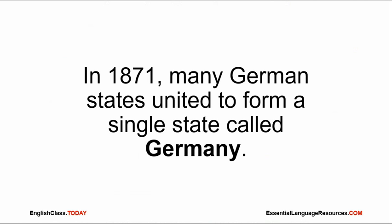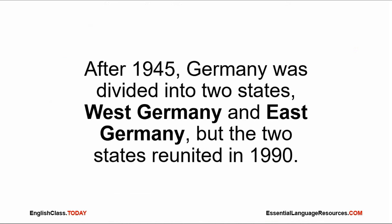In 1871, many German states united to form a single state called Germany. After 1945, Germany was divided into two states, West Germany and East Germany, but the two states reunited in 1990.